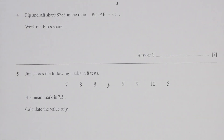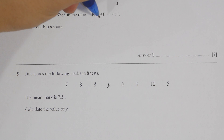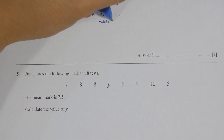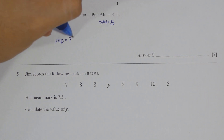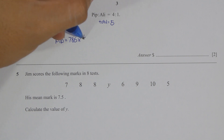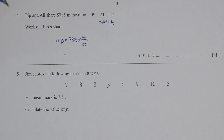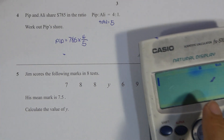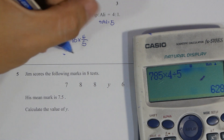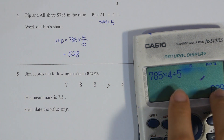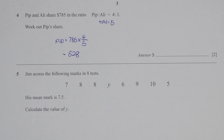For question 4, Pip and Ali share $785 in a ratio. The first thing I did was find the total ratio, which is 5. So Pip equals 785 multiplied by 4 over 5, and the result is 628.